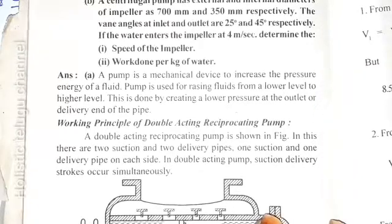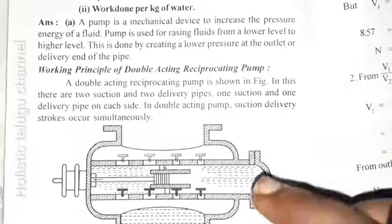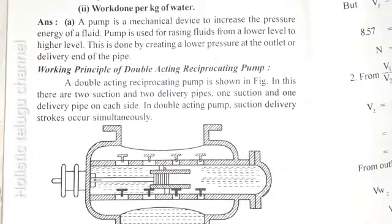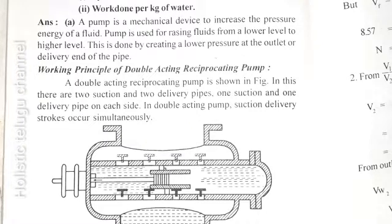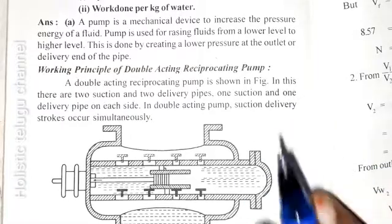Explain the working principle of a double-acting reciprocating pump. You can explain using the diagram from the textbook — it is the standard diagram. A pump is a mechanical device that increases the pressure energy of a fluid. It is used for raising fluid from a lower level to a higher level by creating lower pressure at the inlet or delivery end of the pipe.